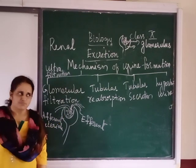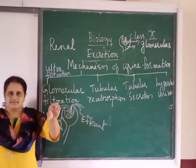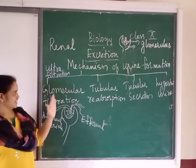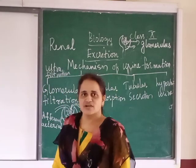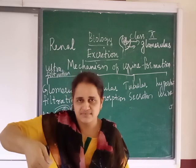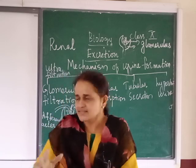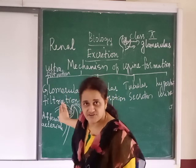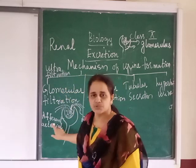The glomerular filtration is therefore a very important term. Filtration takes place in the glomerulus of the nephron, just like filtering tea through a sieve in the morning. Blood filtration takes place in the glomerulus, driven by the pressure difference between the afferent and efferent arterioles.